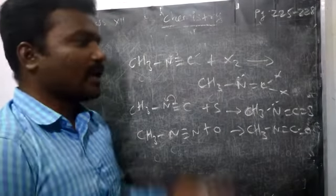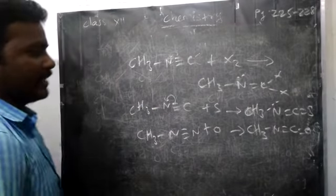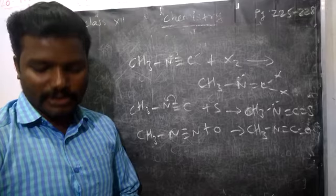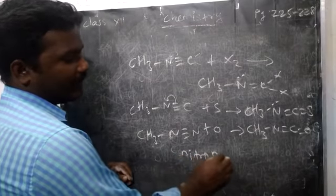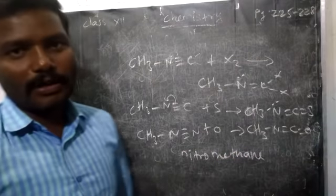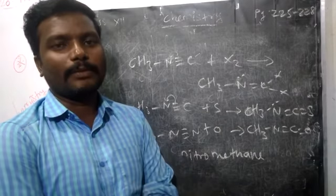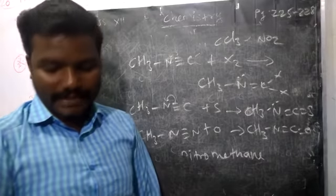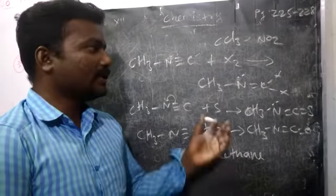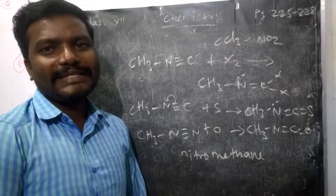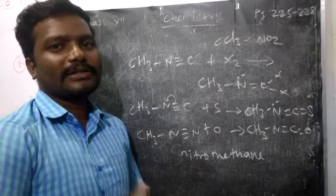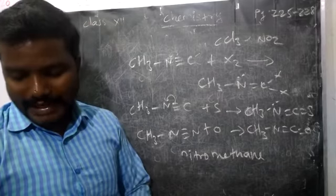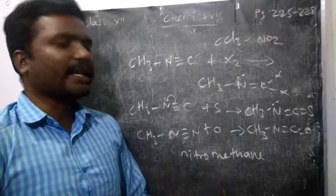We are going to see the uses of nitro compounds and also cyanide compounds. Nitro alkanes are very important. It is used in fuels for cars — in car fuel, small amounts of nitro alkanes, particularly nitromethane, can be used. Next, chloropicrin — molecular formula CCl3NO2 — is used as an insecticide, an insect-killing compound. Nitro alkanes are also a precursor or additive to petrol. Along with petrol, you can use some ammonia. It is also used to prepare many other compounds like esters, cyanides, rubber compounds, and dyes.